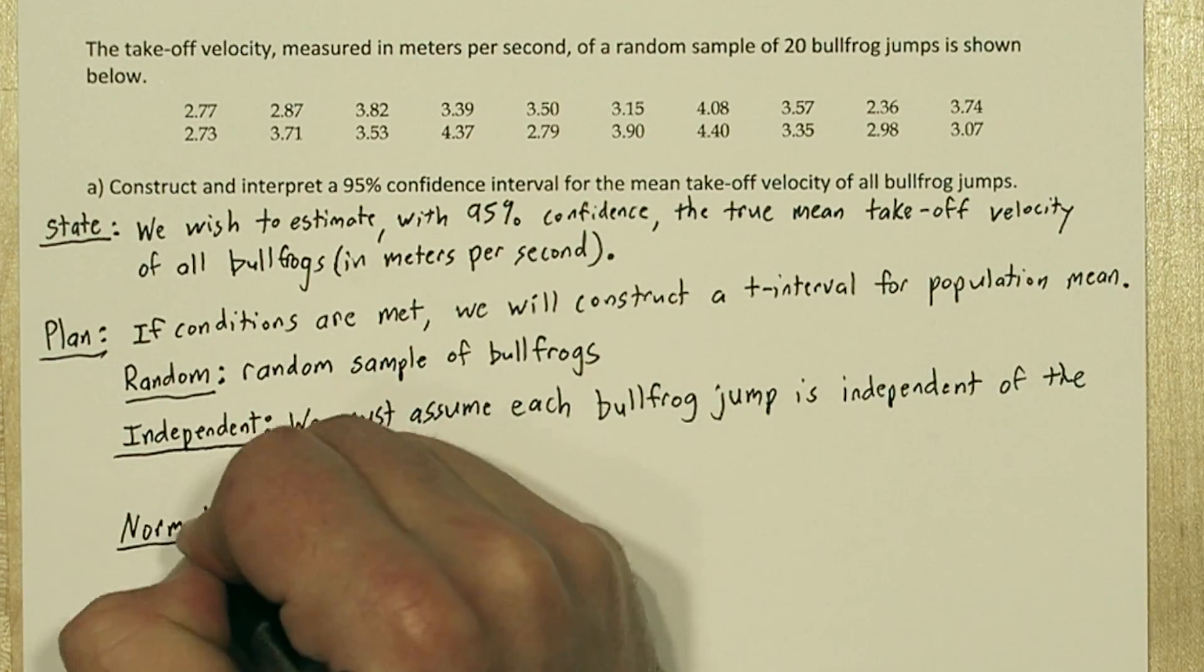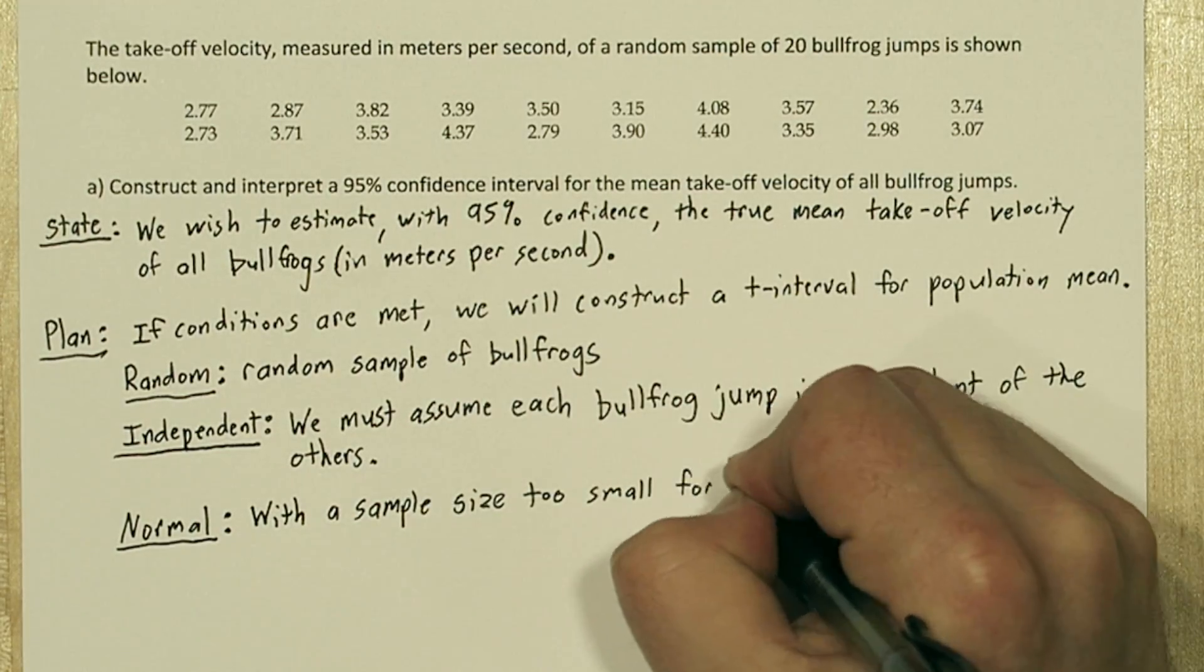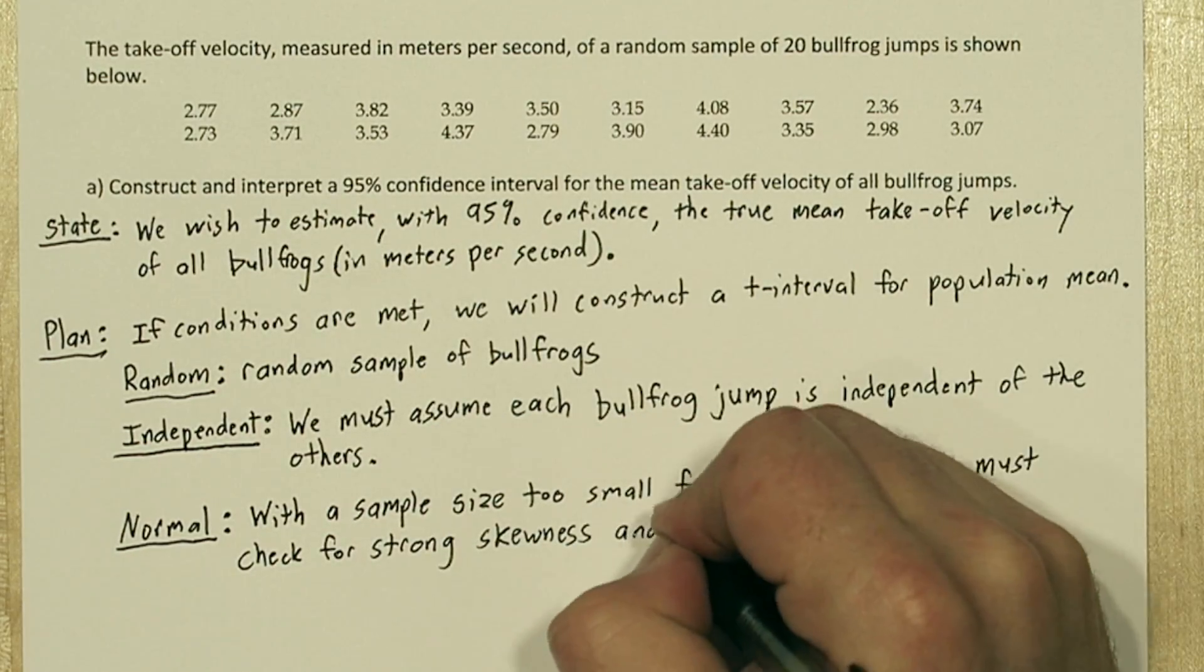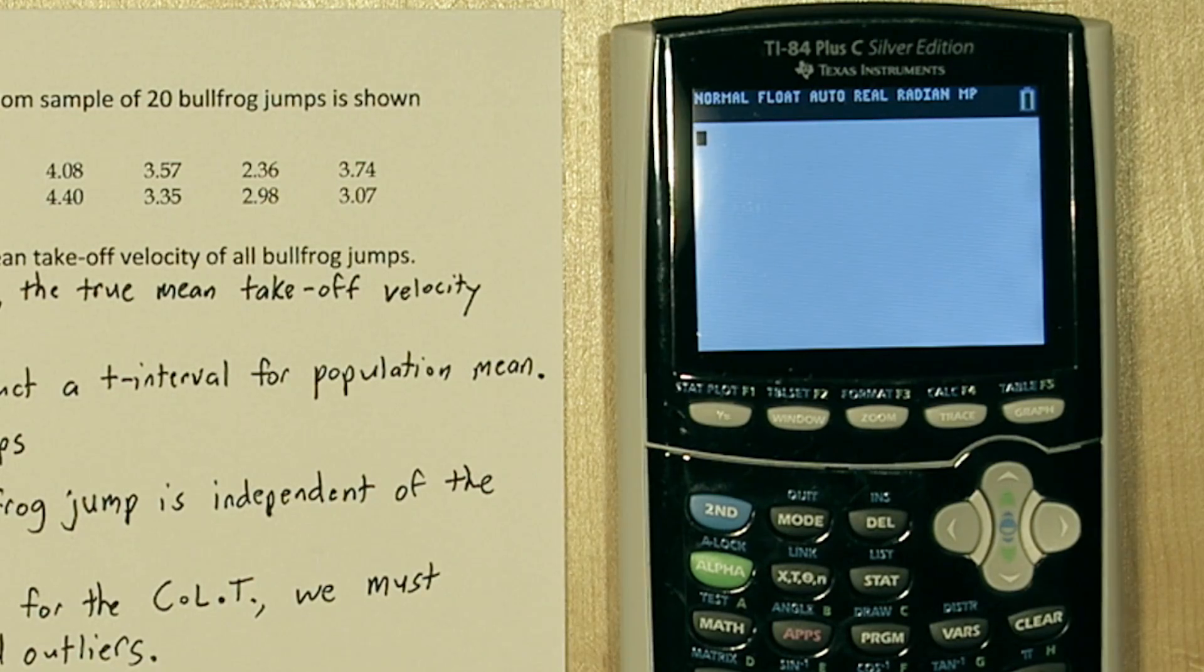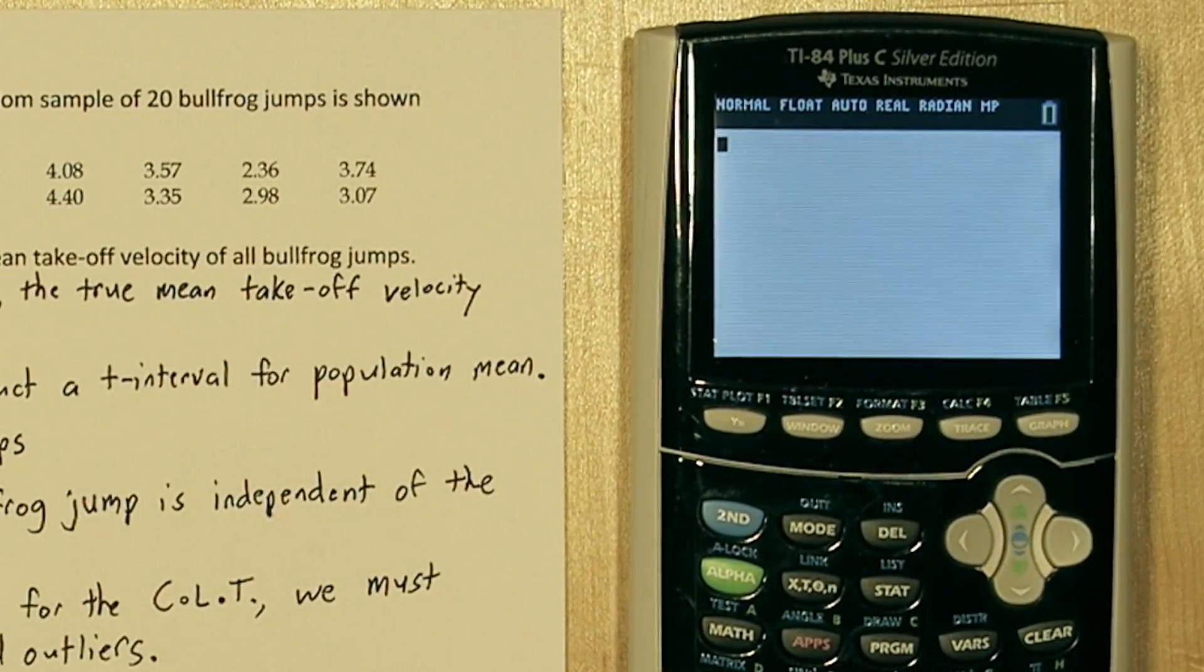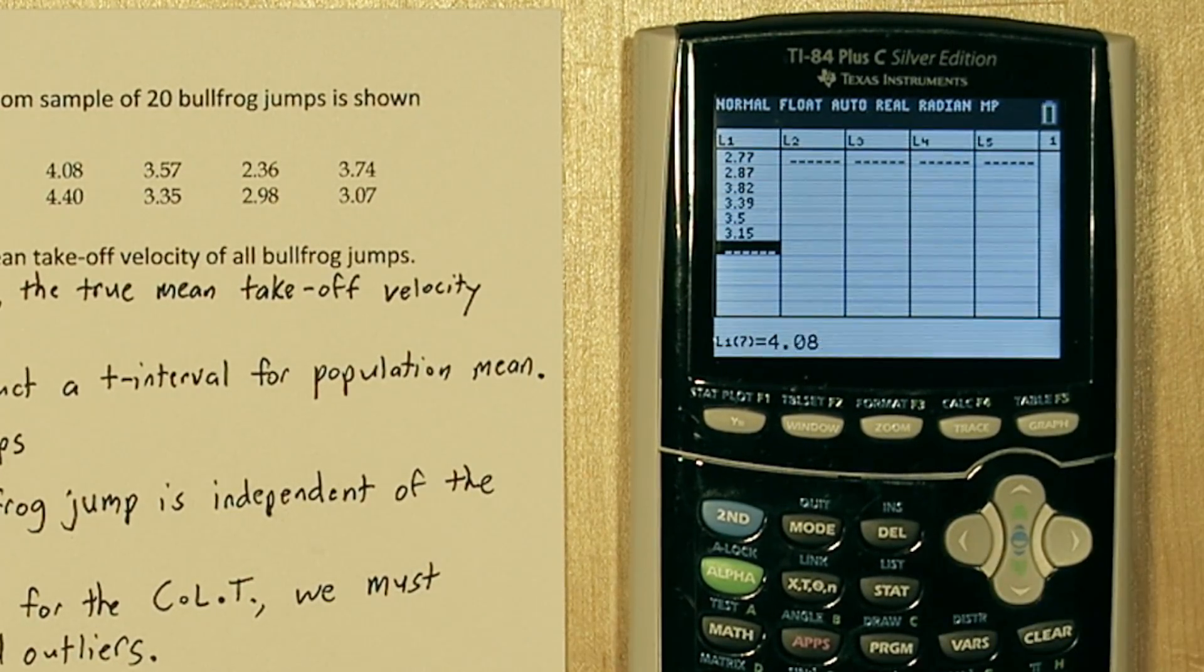Now for the normal condition, we have a sample size of 20, so it's too small for the central limit theorem to apply, which we would need 30. So we need to check for strong skewness and outliers. To do this, we can use the calculator. Start by inputting the data into list 1. Press the stat button, then enter, and type all the values into list 1.